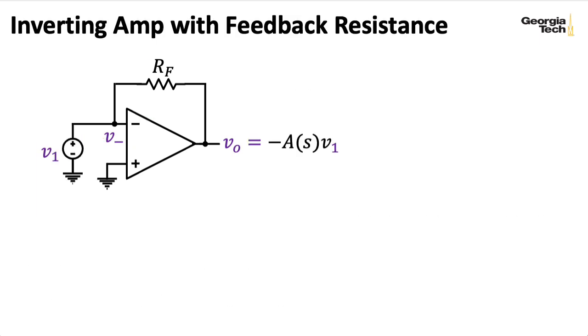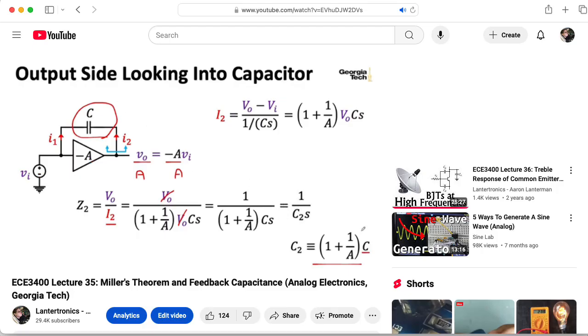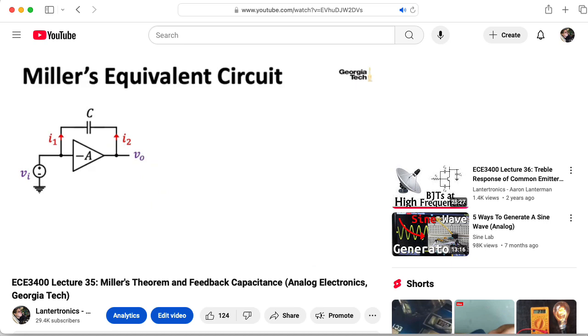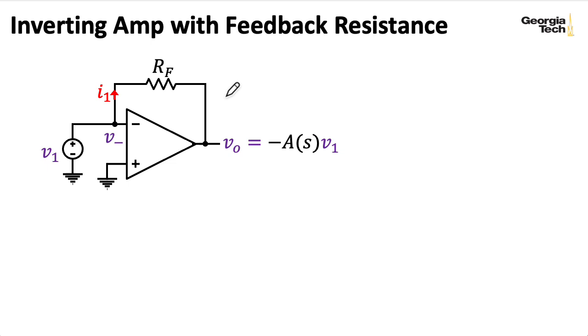So let's use the same setup we used in the Miller's theorem lecture. I'm going to place a voltage source V1 here, and then find the induced current I1 here. Now, of course, the voltage at the negative terminal is going to match V1. If you haven't seen my previous lecture on Miller's theorem, I recommend going back and watching that for context, but it's not strictly necessary to understand this lecture. In that original lecture on Miller's theorem, I just had a constant gain A here for the op amp that was not a function of frequency, and I had a capacitor in the feedback loop instead of a resistor.